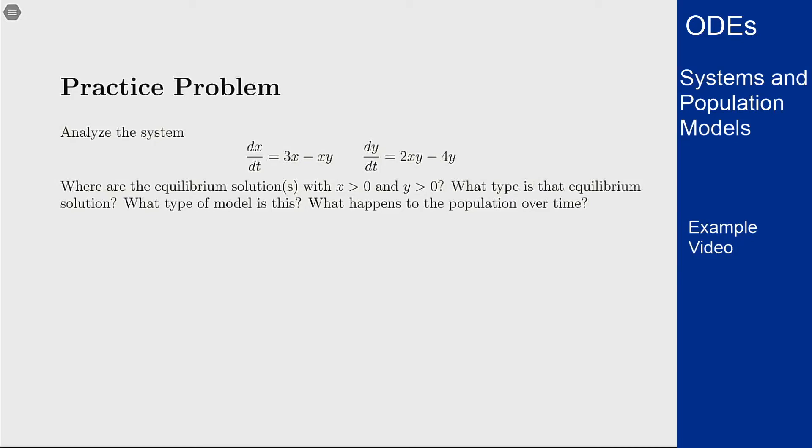In this example we want to analyze the following differential equations as a population model, classify the equilibrium solutions and figure out what's going to happen over time to the situation. The differential equation system here is dx/dt = 3x - xy and dy/dt = 2xy - 4y.